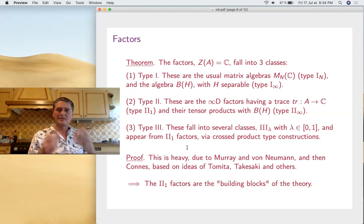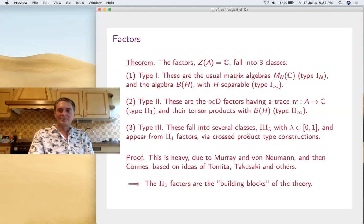Connes proved, based on ideas of Tomita-Takesaki and others, that they can be recovered from the type II₁ factors via kind of crossed-product constructions. So this classification is very heavy. It's Murray-von Neumann and then Connes, a lot of work. And the conclusion is that the type II₁ factors are the building blocks of the whole theory. So these are the factors to be studied.